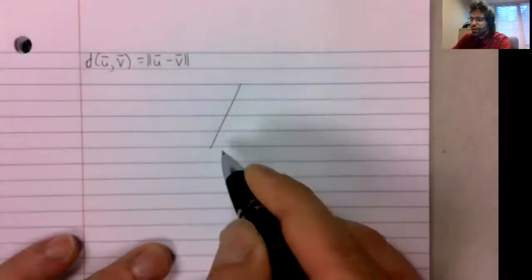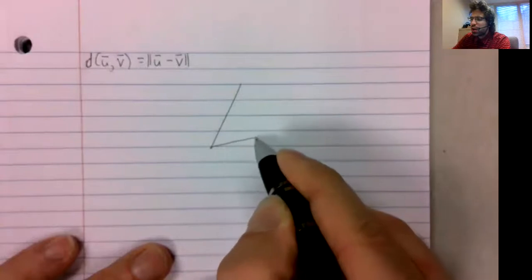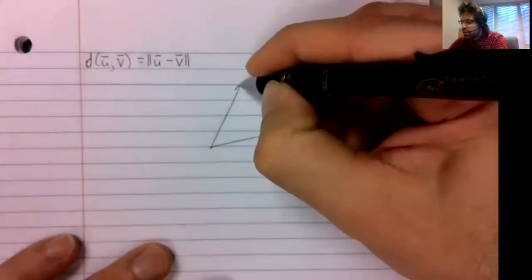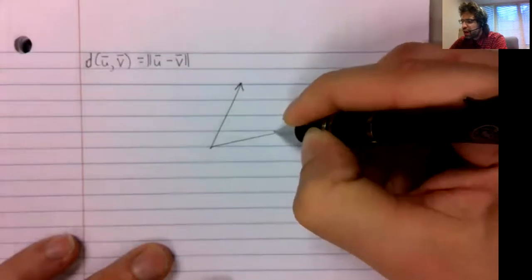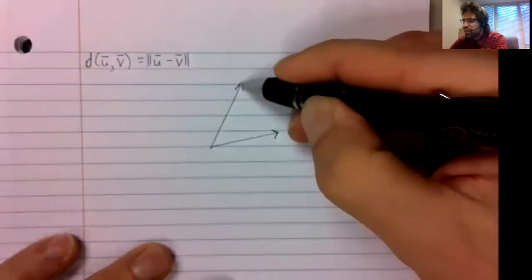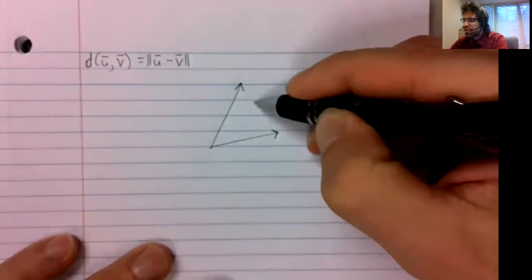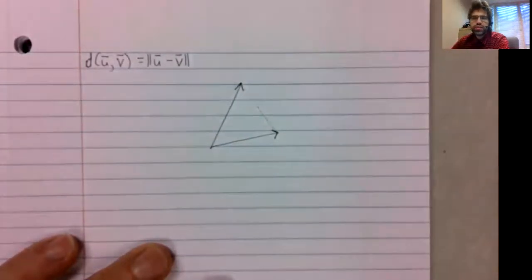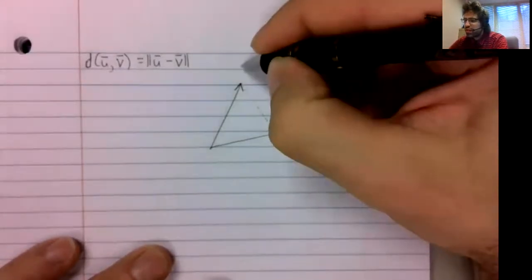And if we look in R2, we can verify that this is just the standard Euclidean distance between the tips of the vectors.